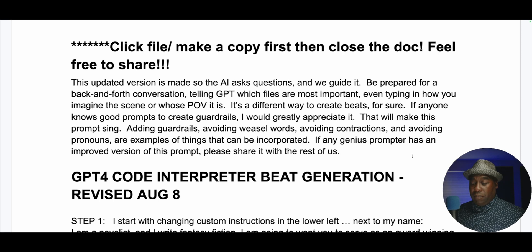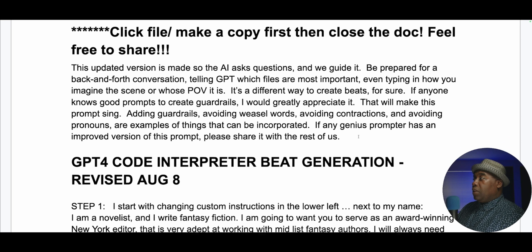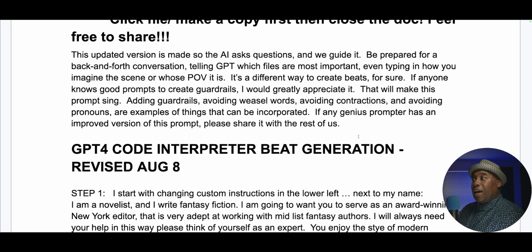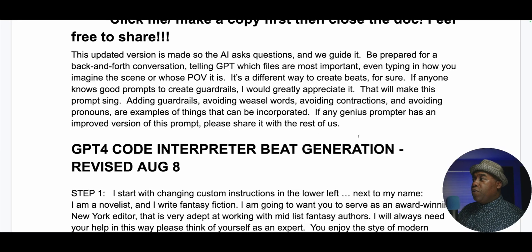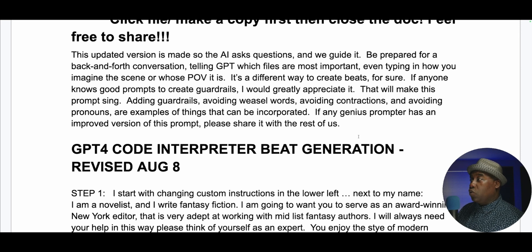If you click and make a copy, this is your way to get a copy of this. This updated version is made so that the AI asks questions and we guide it. Be prepared for a back-and-forth conversation telling GPT-4 which files are most important, even typing in how you imagine the scene or what the POV is. It's a different way of creating beats for sure. If anyone knows good prompts to create guardrails, I would greatly appreciate it.